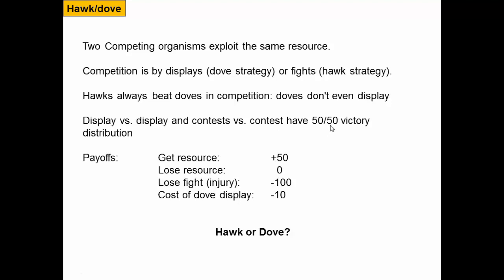Let's think about the payoffs. When two individuals compete, the winner that gets the resource gains 50 points, while the individual that doesn't get the resource gets nothing. If two individuals fight, the loser gets injured, and that injury cost is worse than having gotten the resource. Doing a display also takes energy and has a cost. So what's the optimum strategy in a group of hawks and doves — what's best for the population, or for individuals within it?